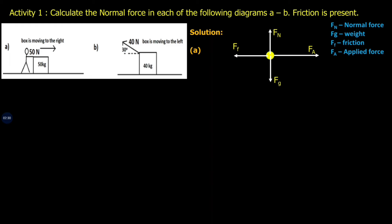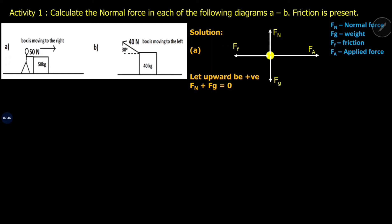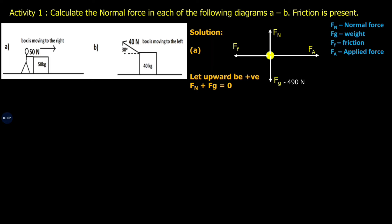We're going to focus on the forces that are perpendicular to the surface to calculate the normal force — so it's going to be the normal force itself and the gravitational force, or the weight. We're going to make the upward direction positive, almost like a Cartesian plane y-axis. So Fn is in the positive direction and Fg is in the negative direction. Fg is 50 times 9.8, which is 490 Newtons in the negative direction.